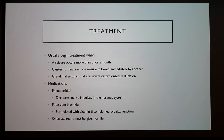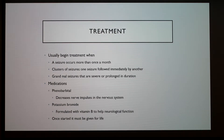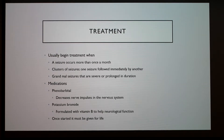Treatment usually begins when seizures occur more than once a month, in clusters where one seizure is followed immediately by another, or when grand mal seizures are severe and prolonged — longer than that two-minute interval. Different medications include phenobarbital, which decreases nerve impulses in the nervous system, and potassium bromide, formulated with vitamin B to help neurological function. Once a medication is started, it has to be given for life. With my dog, we actually don't treat his seizures because he only gets them about twice a year — treatment could do more harm than good.